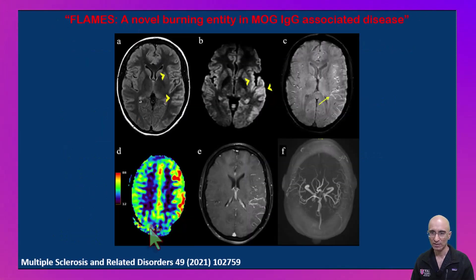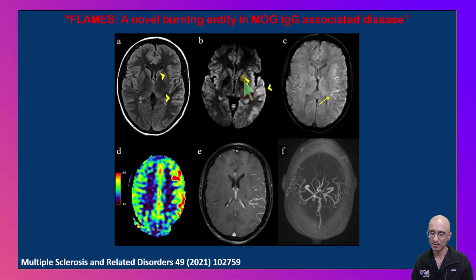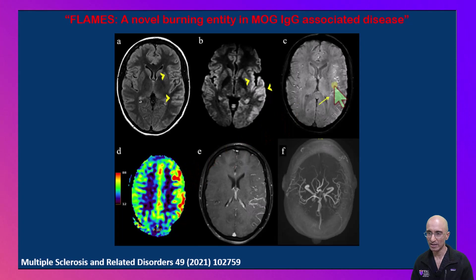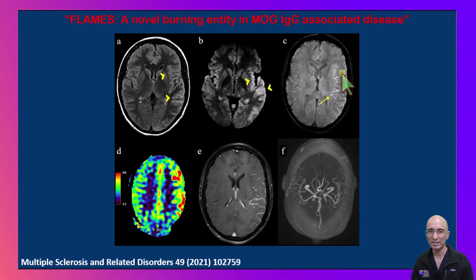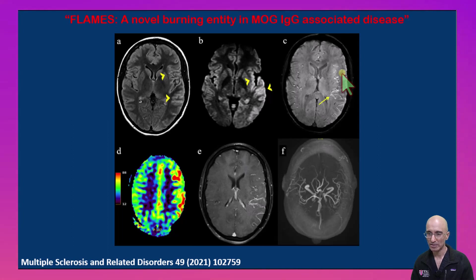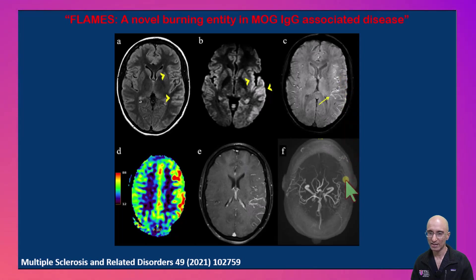I found this article in the literature which demonstrates the imaging features in FLAMES. Just as we saw in our patient, there is FLAIR hyperintensity in the cortex with restricted diffusion. They also did perfusion imaging which confirms there is increased perfusion in the affected cerebral hemisphere. As we saw in our patient, the SWI demonstrates increased hyperintensity in the vessels because of decreased oxygen extraction in the setting of hypervascularity. There is diffuse leptomeningeal enhancement and MR angiogram images demonstrate increased vascularity in the affected side.